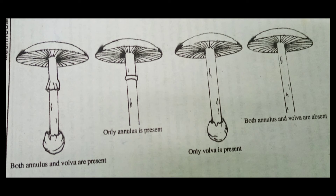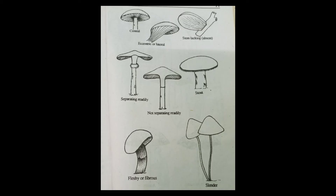On the basis of the presence or absence of annulus and vulva, the mushroom can be put into 4 categories: (1) the mushroom in which both annulus and vulva are present, as in Amanita species; (2) in which only annulus is present, as in Agaricus species; (3) only vulva is present, as in Volvariella species; (4) in which both annulus and vulva are absent, as in Marasmia species.